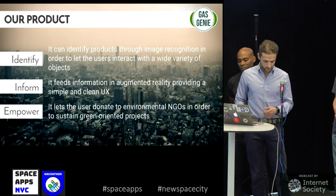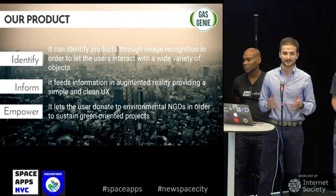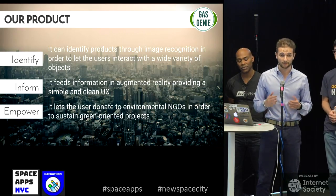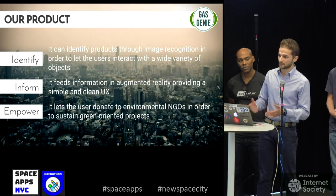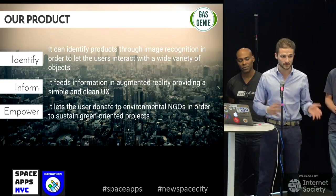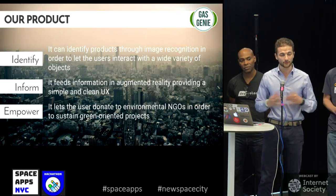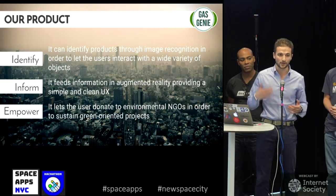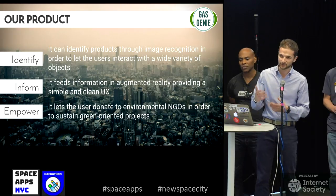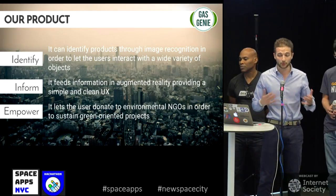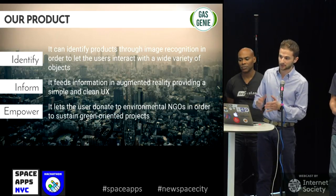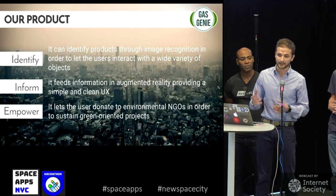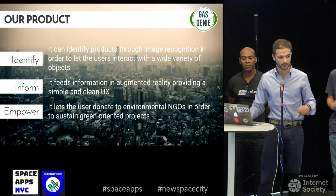Our application does this through three main features. First, identify: the application can identify any product it's visualizing and understand how it's made, pulling from an internal database and using image recognition. Then it pulls up information in augmented reality, so while you're watching the product on the same screen, you are provided with all the information about the CO2 amount that this product faced during its production. Then you are empowered: users can actually purchase and donate money to charities working on these issues.